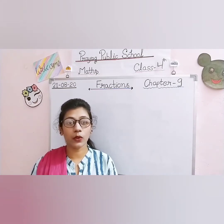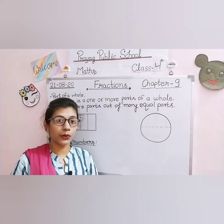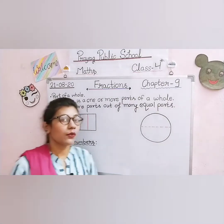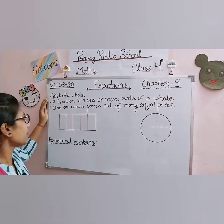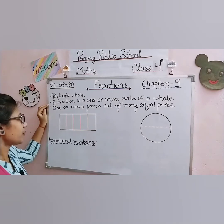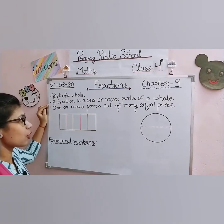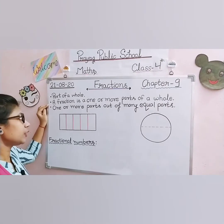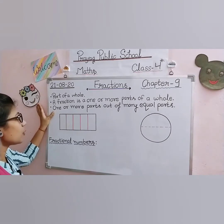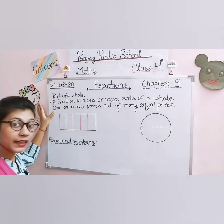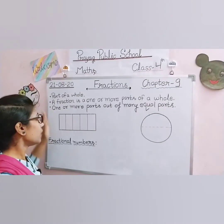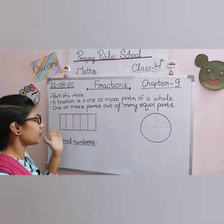Let's recap what we studied about fractions in previous classes. The definition: a fraction is a part of a whole — fraction is one piece or one part of a whole. In other words, a fraction is one or more parts of a whole — one or more parts out of many equal parts. We must remember that in a fraction, all parts must be equal. If the parts are not equal, we cannot write that figure as a fraction.